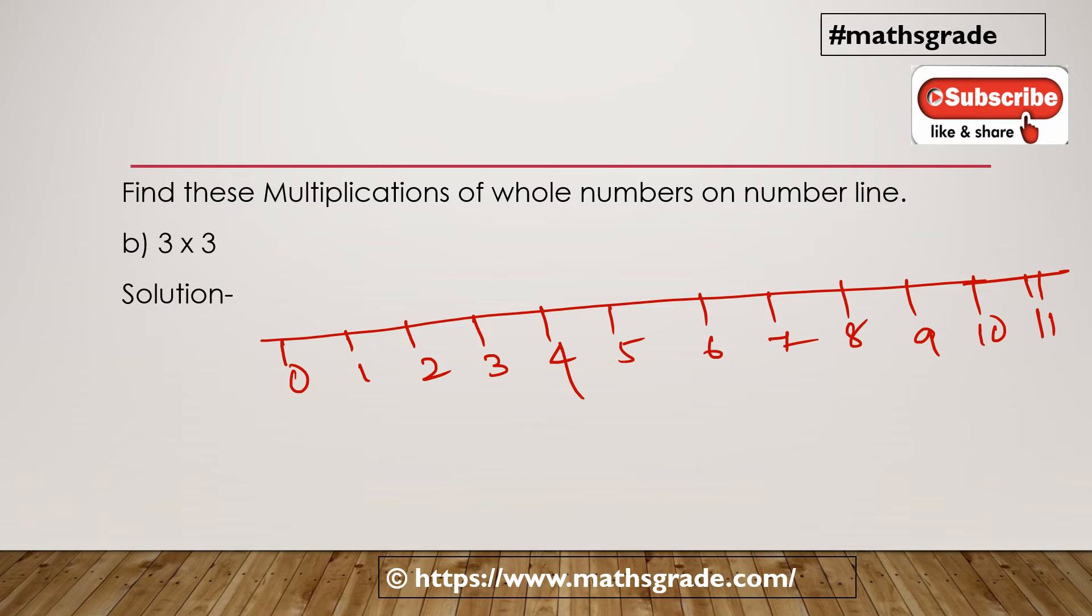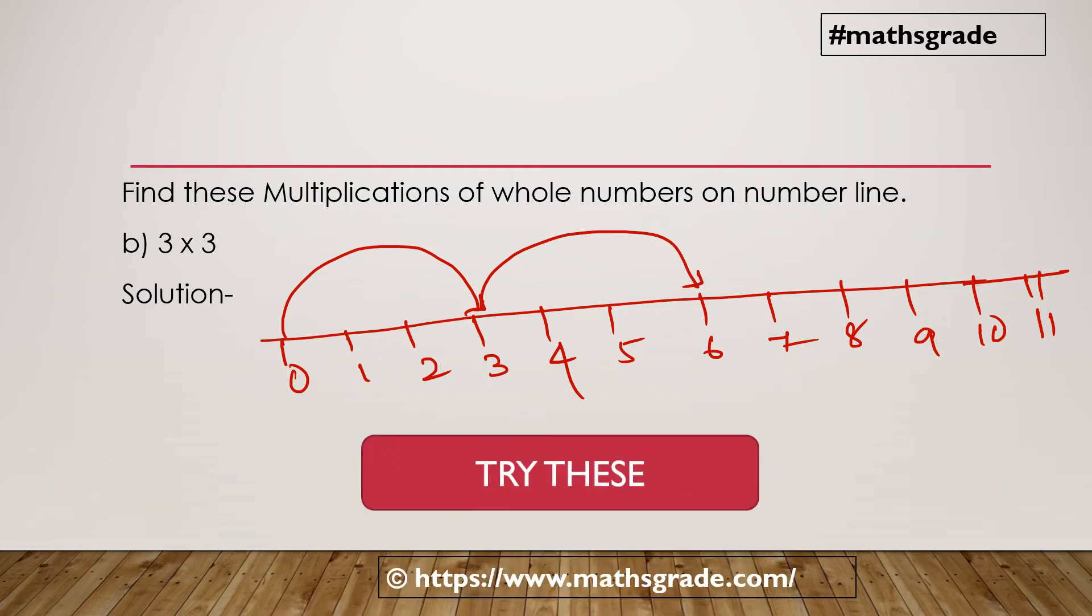Starting from 0, move 3 units. That is 3. Then from 3, move 3 units. That is 6, 3 units. And from 6, move 3 units.